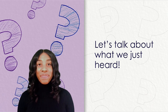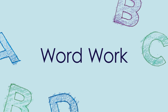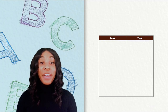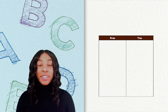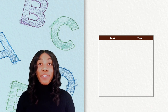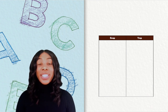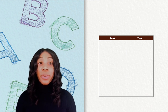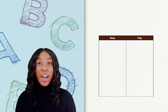Awesome work, friends! It's time for us to look at some high-frequency words and add them to our snap or track chart. We will put words that play fair or follow the rules we know in the snap column, and words that do not play fair or are not spelled the way we would expect in the track column. Here we go!